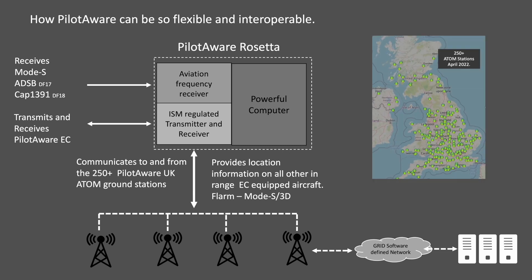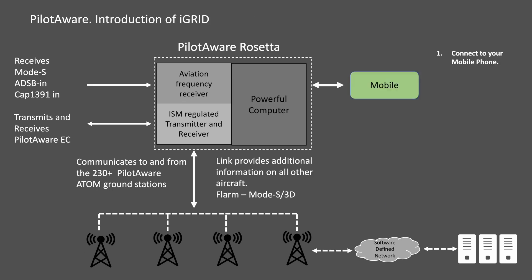Naturally, all PilotAware Atom stations also contribute to providing data for multilateration. And now we introduce the combined strength of the AtomGrid, SkyGrid and iGrid working together. iGrid combines the low latency inherent in direct detection, AtomGrid broadcast and SkyGrid relay with the increased bandwidth and range available when using the mobile network.